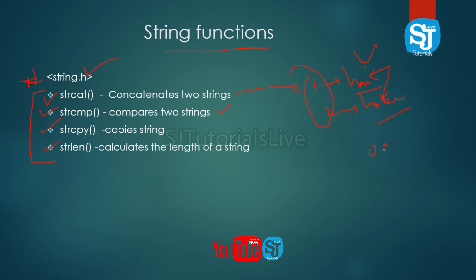When two strings are equal using strcmp, the result is 0.